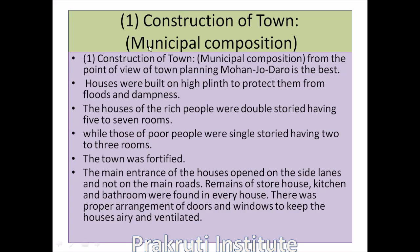The first feature of Mohenjo-daro is the construction of the town — its municipal composition. From the point of view of town planning, Mohenjo-daro is the best. Houses were built on high platforms to protect them from floods and dampness. Houses of rich people were double-storied having five to seven rooms, while those of poor people were single-storied having two to three rooms. Towns were fortified. The main entrance of houses opened on side lanes, not on the main road. Remains of storehouses, kitchens, and bathrooms were found in every house, and there was proper arrangement for doors and windows to keep the house airy and ventilated.